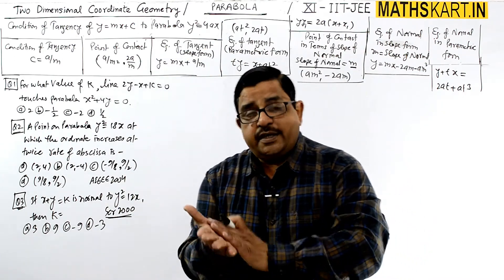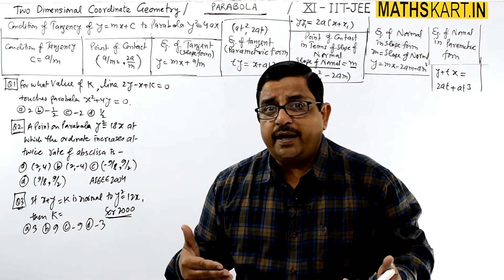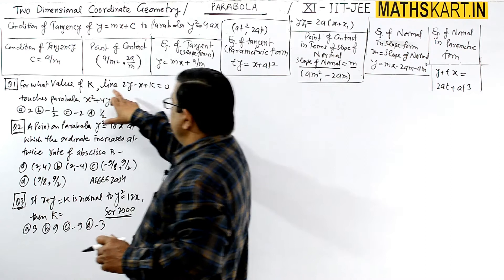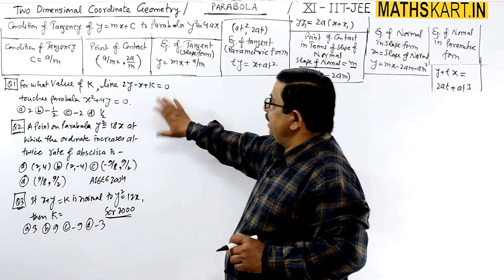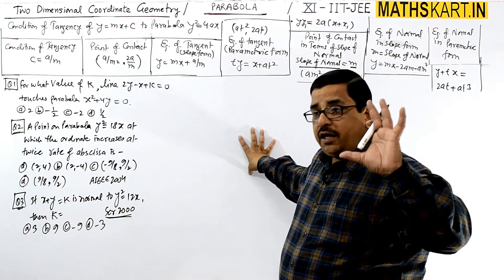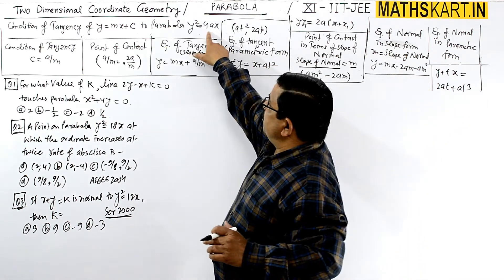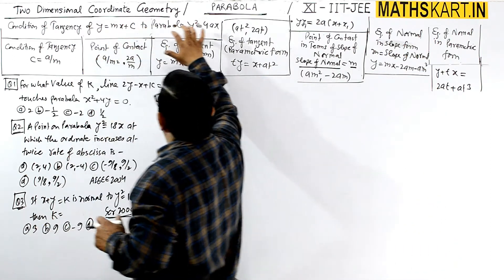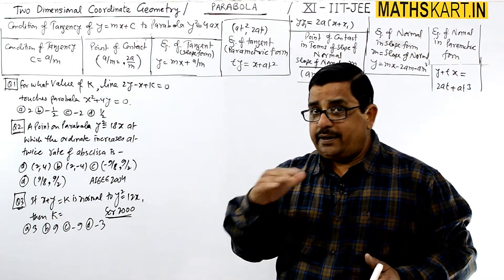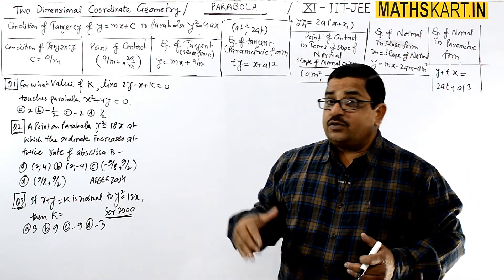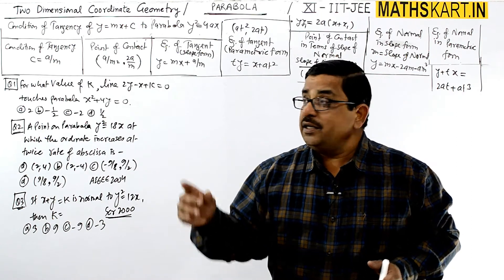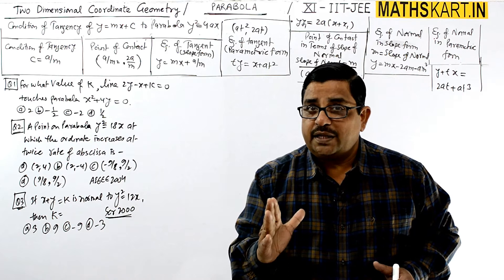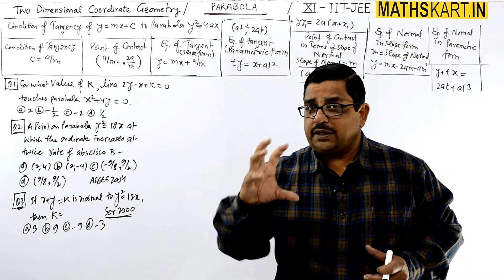So, to summarize: we have derived tangent lines and normal lines in different forms — condition of tangency, point of contact — for the standard parabola y² = 4x. There are four standard parabolas; it is difficult to memorize the results for all four. You can remember one and for the other three, you need to remember the working method and apply it.